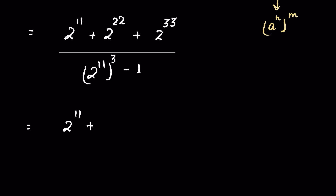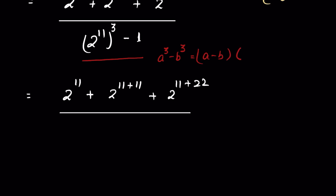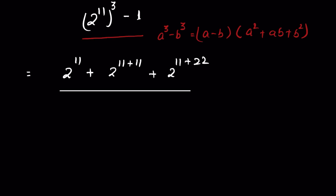We can rewrite 2²² as 2^(11+11) and 2³³ as 2^(11+22). Now if we consider a = 2¹¹ and b = 1, the denominator is in the form a³ - b³. We can expand it as (a - b)(a² + ab + b²), giving us (2¹¹ - 1)(2²² + 2¹¹ + 1).